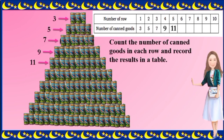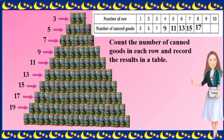How about in the 6th row? Very good, 13. The 7th row has 15, and the 8th row, 17. How many cans are there in the 9th row? Yes, very good, 19. And the bottom row, the 10th row has 21 canned goods.